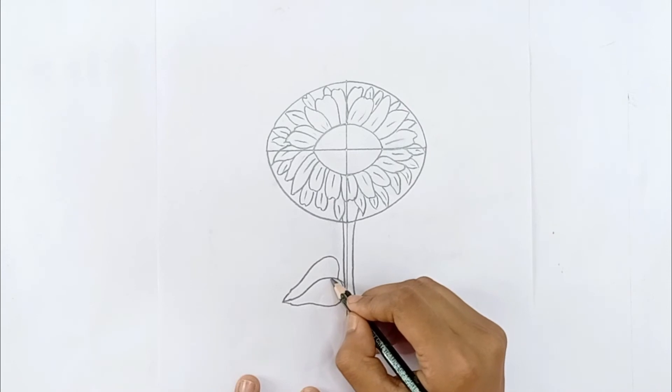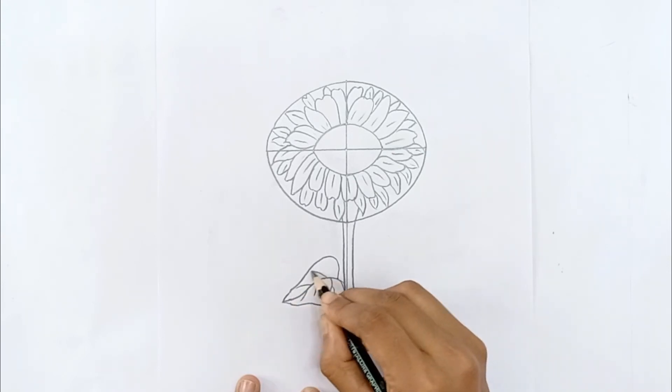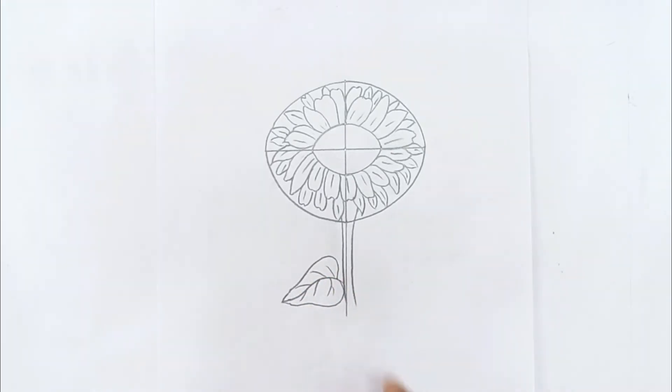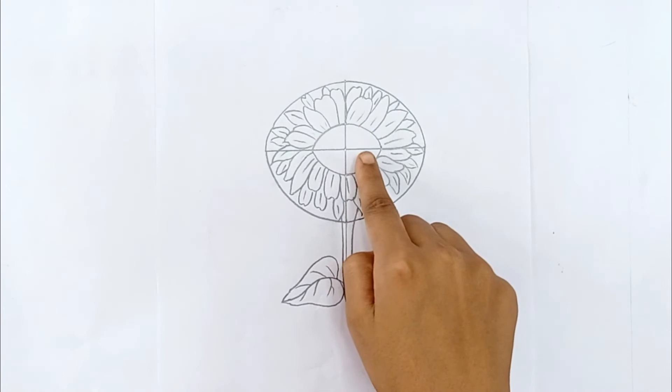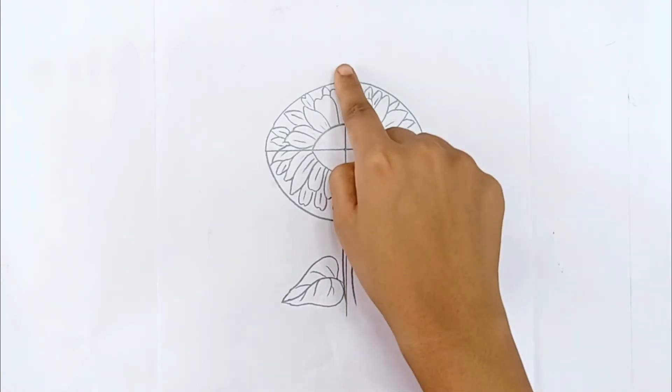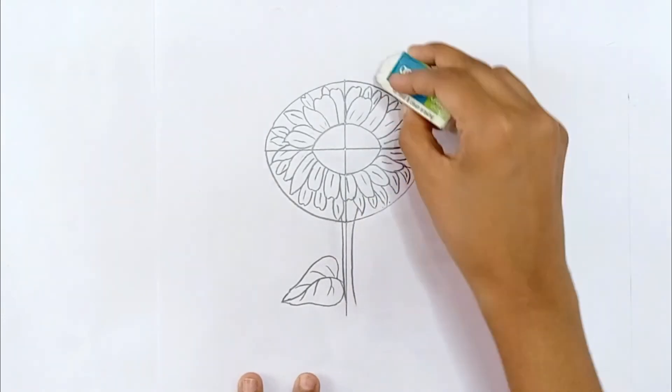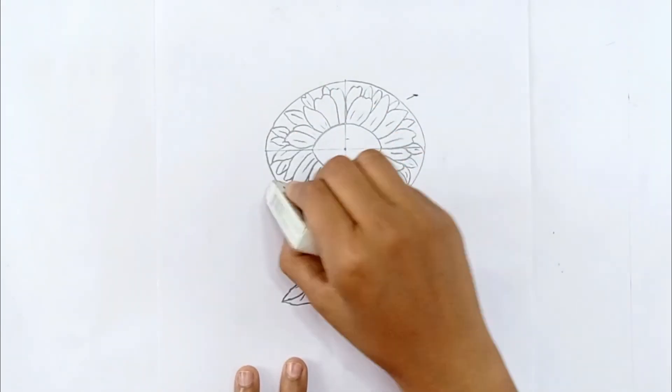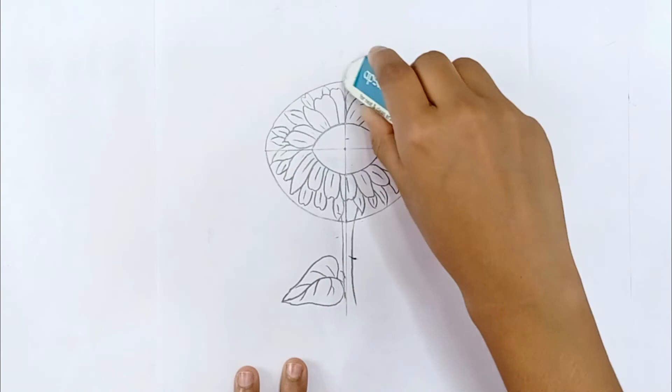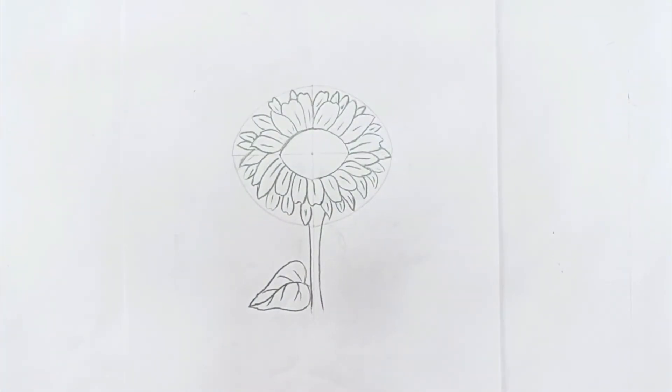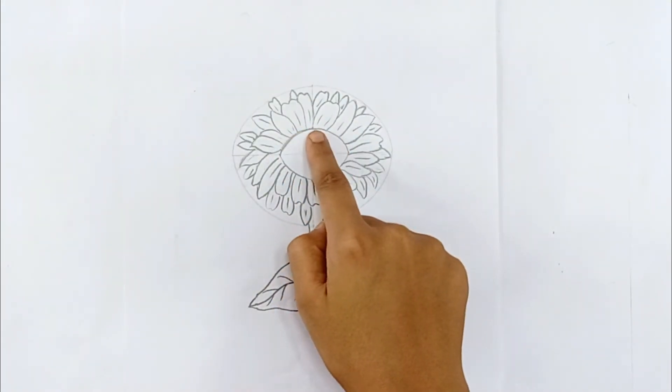I will draw the veins and sub-veins inside the leaf. Now we need to draw the inside of the flower. Before drawing this we need to remove the unnecessary lines. I will draw this inner oval shape a little deeper.